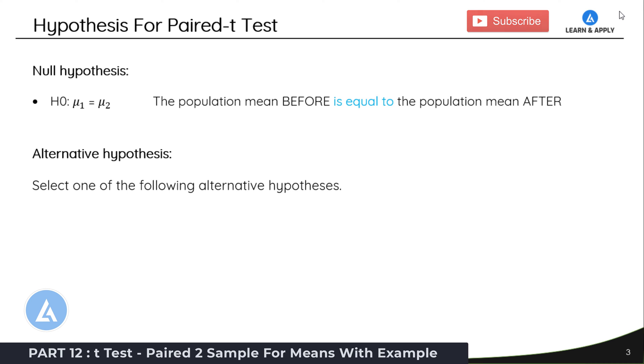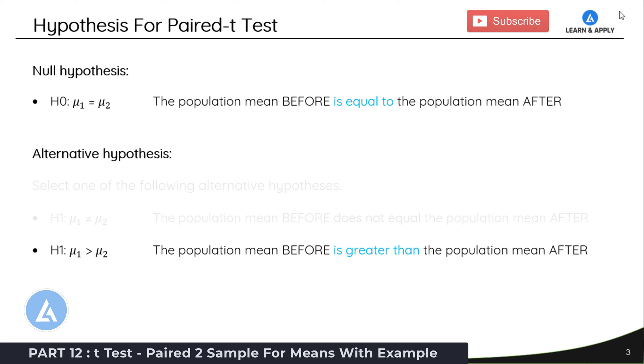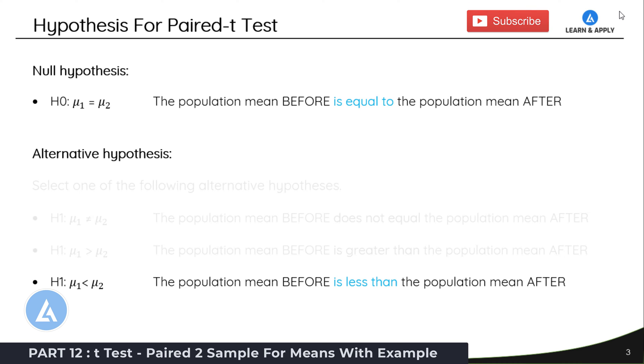And there can be any one of the following alternative hypotheses. First, H1: μ1 is not equal to μ2, meaning the population mean before does not equal the population mean after. Or it can be H1: μ1 is greater than μ2, the population mean before is greater than the population mean after. Or it can be H1: μ1 is less than μ2, the population mean before is less than the population mean after. We can select any one of these alternative hypotheses along with the null hypothesis of μ1 equals μ2.